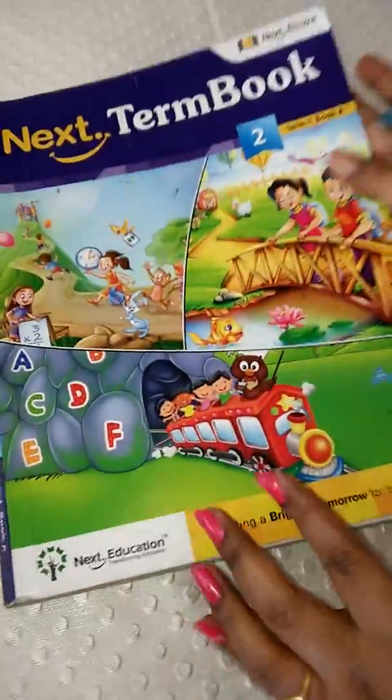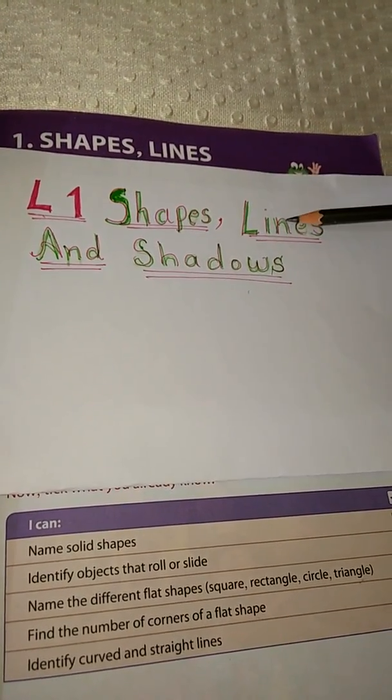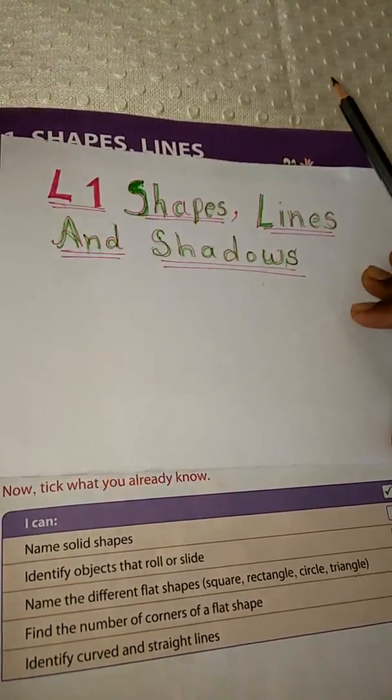I want you all to open the textbook to page number 3. Today we are going to learn lesson number 1: Shapes, Lines and Shadows. But before that, let me do an activity. In this activity, I will come to know how many shapes you all know, how many shapes you have learned in standard 1.